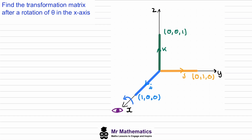When we find our transformation matrix after the rotation, we find it by transforming each of these unit base vectors. When we rotate about the x-axis, every point along this line becomes invariant, meaning it's rotated onto itself. So the transformed image of i will be (1, 0, 0), but the points along the y-axis are rotated anti-clockwise by theta degrees.